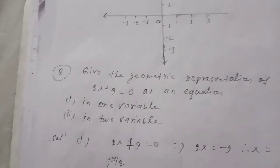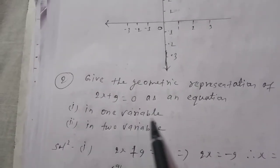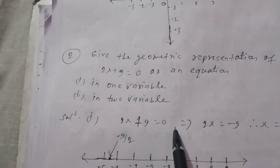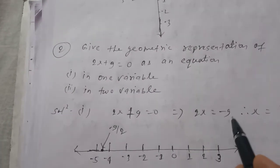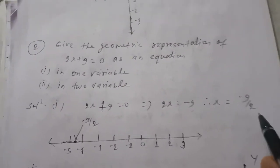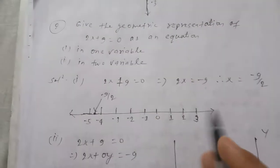Give the geometrical representation of this equation in one variable and in two variables. 2x plus 9 equal to 0. So 2x equal to minus 9, x equal to minus 9 by 2. Number line representation: